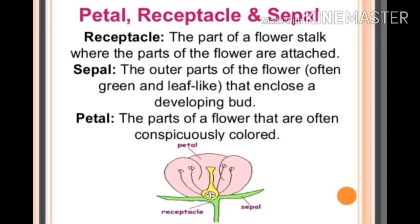Sepals are the outermost part of the flower. They are often green and leaf-like in appearance, and they enclose a developing bud. These are generally leaf-like and green in color, and in the bud condition, when the flower is in the form of a bud, the sepals protect the flower.